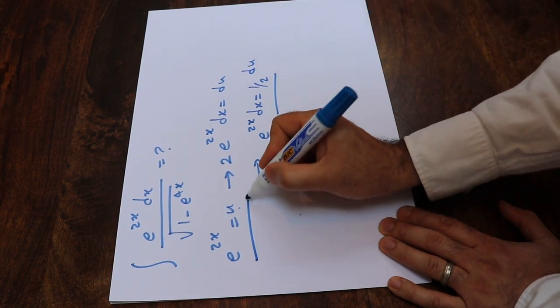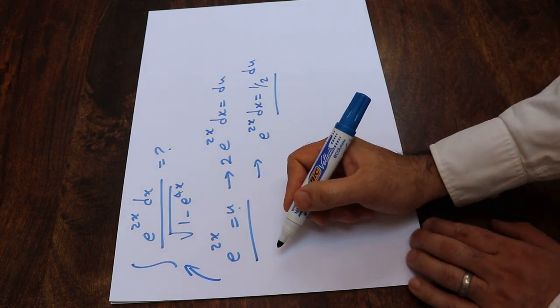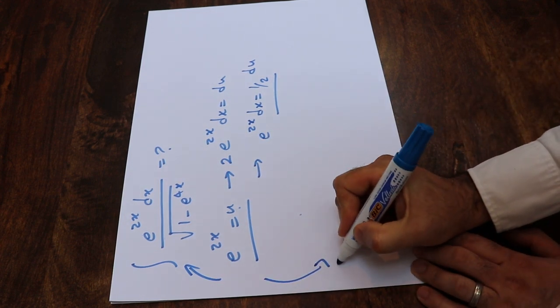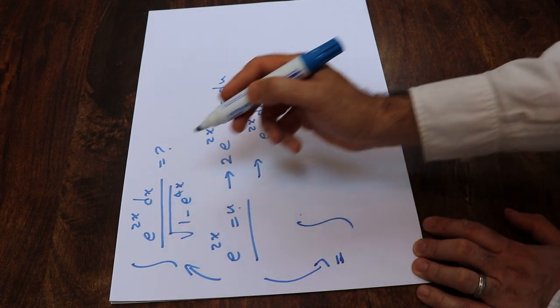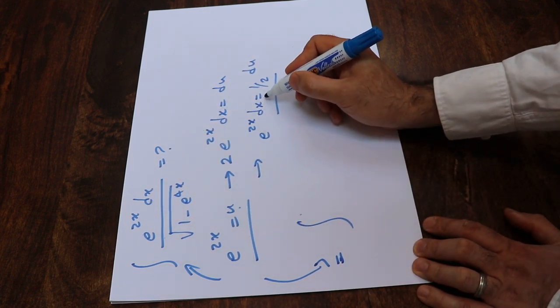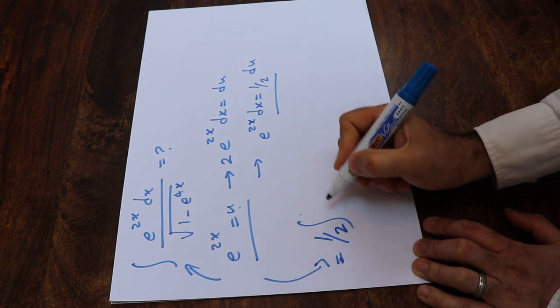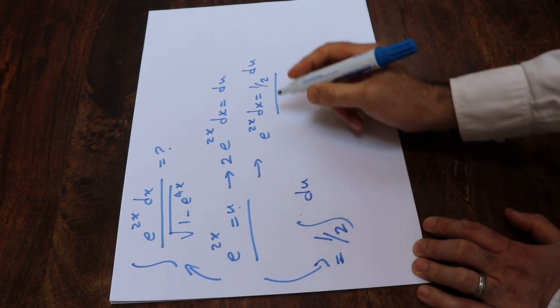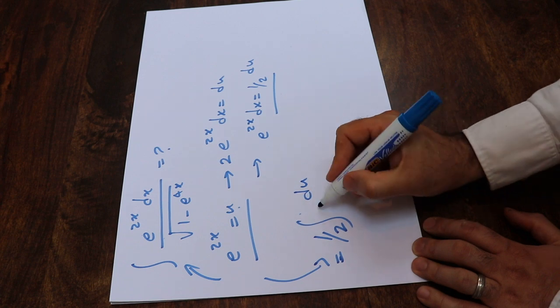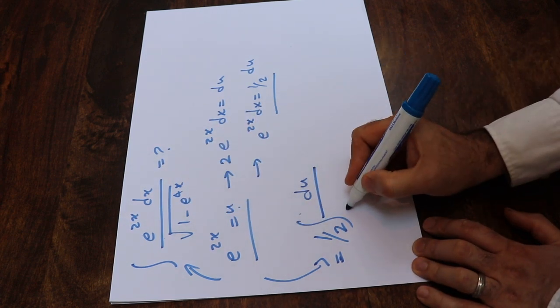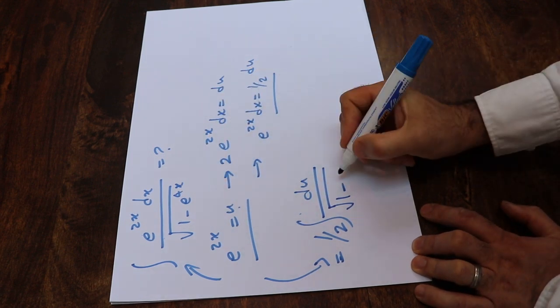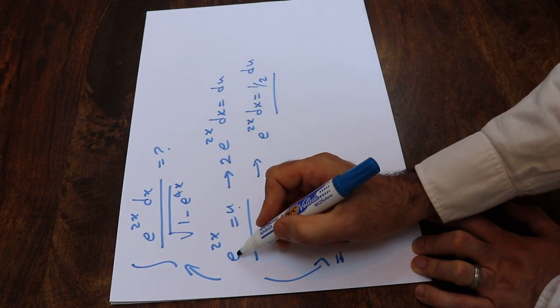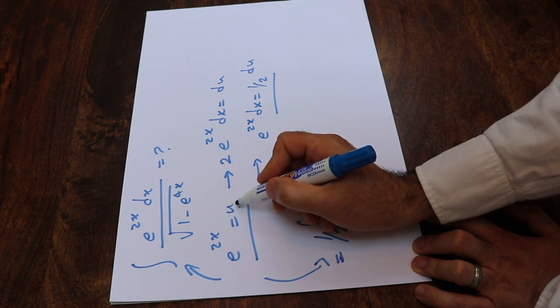So if you substitute these two expressions into this integral, you can rewrite this integral as the integral of 1/2 times du divided by the square root of 1 minus e^(4x), which will be equal to u squared because e^(2x) is equal to u.